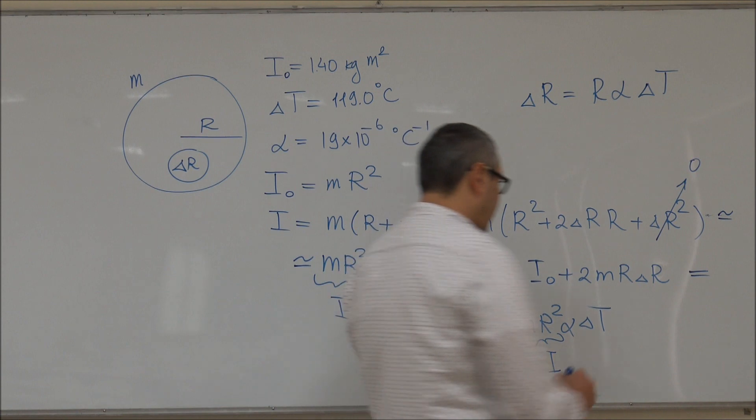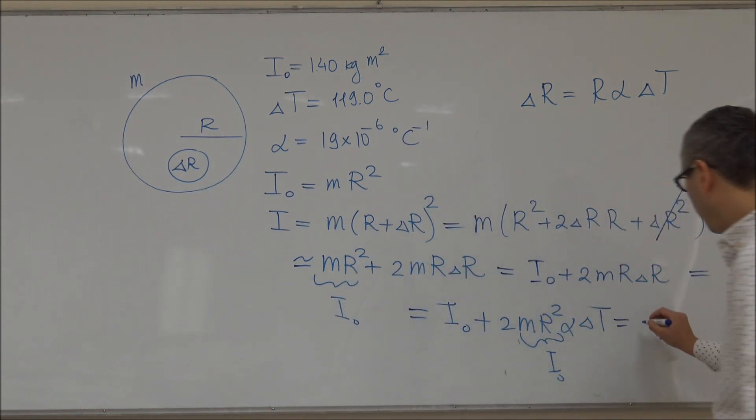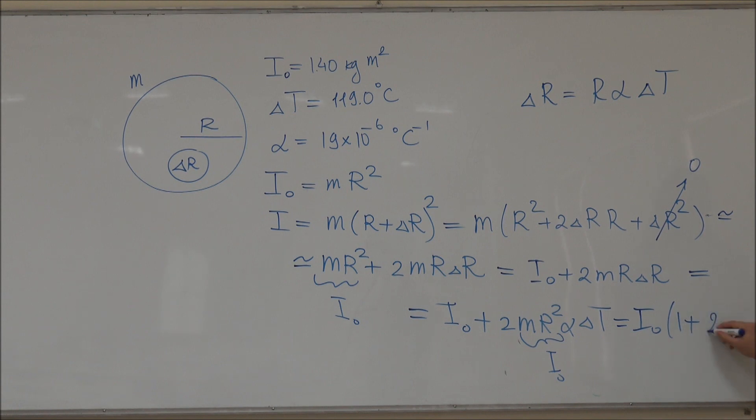So we can take that I₀ out of the parenthesis and we get I₀(1 + 2αΔT). So this will be the new moment of inertia, I₀(1 + 2αΔT).